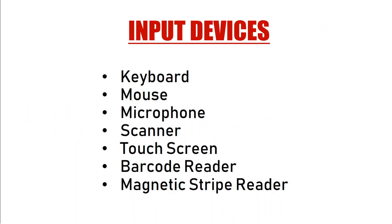Now for input devices: we have the keyboard, mouse, microphone, scanner, touch screen — your mobile has a touch screen, and swiping or tapping is also an input. There is a barcode reader, which everyone has seen at a shopping mall — it scans the price of a product and generates the bill. There is also a magnetic stripe reader, used to read data from your credit card or debit card when you swipe your card to make a payment.